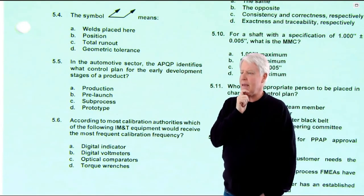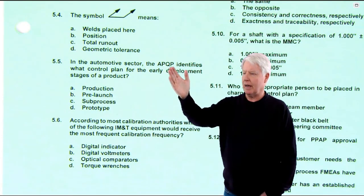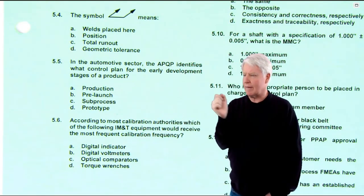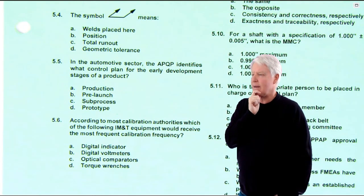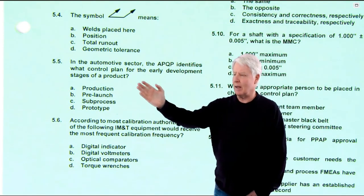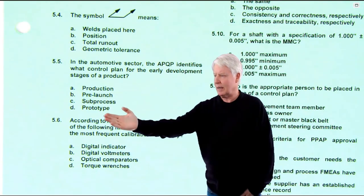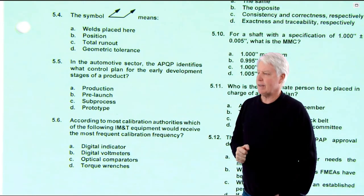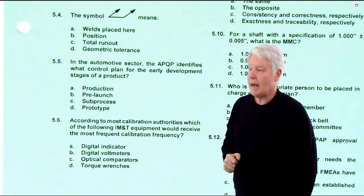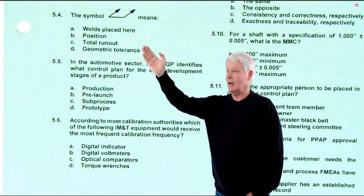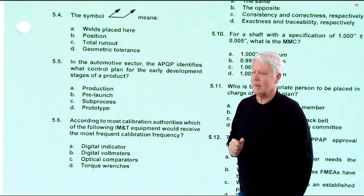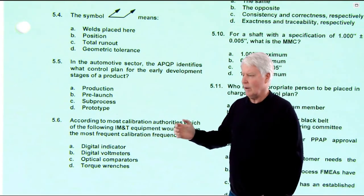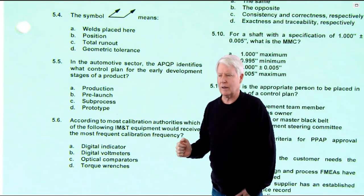Question 5.5: In the automotive sector, APQP — Advanced Product Quality Planning — identifies what control plan for the early development stages of a product? Early development stages means prototype. So it's a word alignment — 5.5 is going to be D, and that is correct. A lot of these in this chapter are look-up ones. Hopefully you study this well enough that you don't have to look them all up.